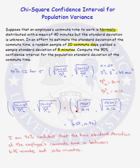We finish the problem by saying, I am 90% confident that the true standard deviation of the employee's commute time is between 6.35 minutes and 10.96 minutes, and our confidence interval problem is complete.